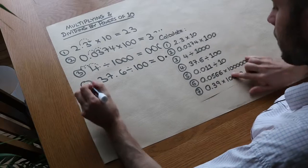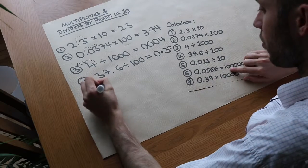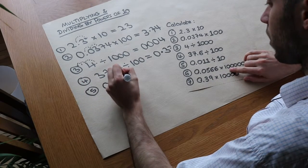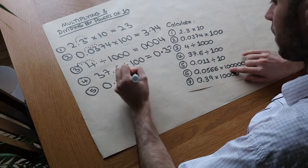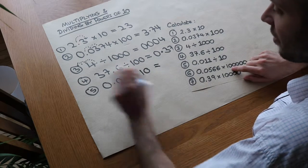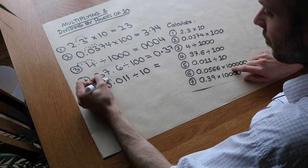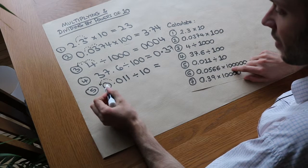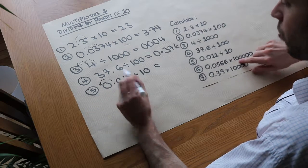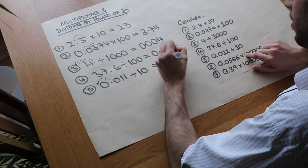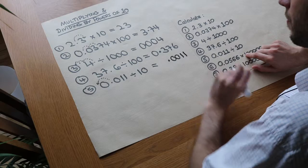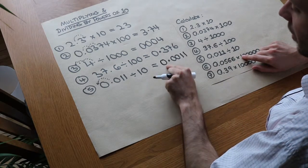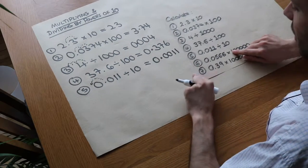What about the fifth one: 0.011 divided by 10? There's only one zero in 10, so it's going to move one place to the left, giving 0.0011. We just need to put a 0 before that decimal point because the units digit is 0.